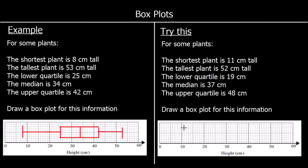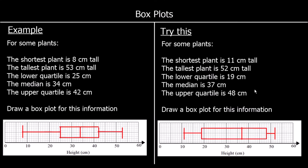The shortest plant is 11cm. The tallest is 52. The lower quartile is 19cm. The median is 37. And the upper quartile is 48. We join a box around the quartiles, which is the middle 50% of the data, and draw lines out to our lowest and highest values. And there is another box plot.